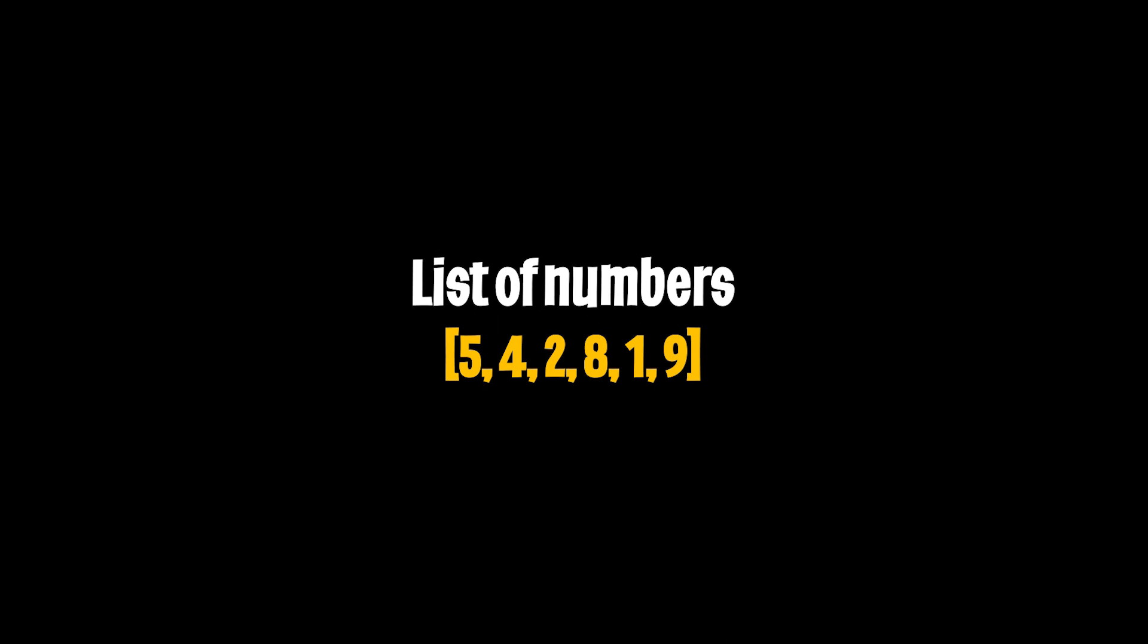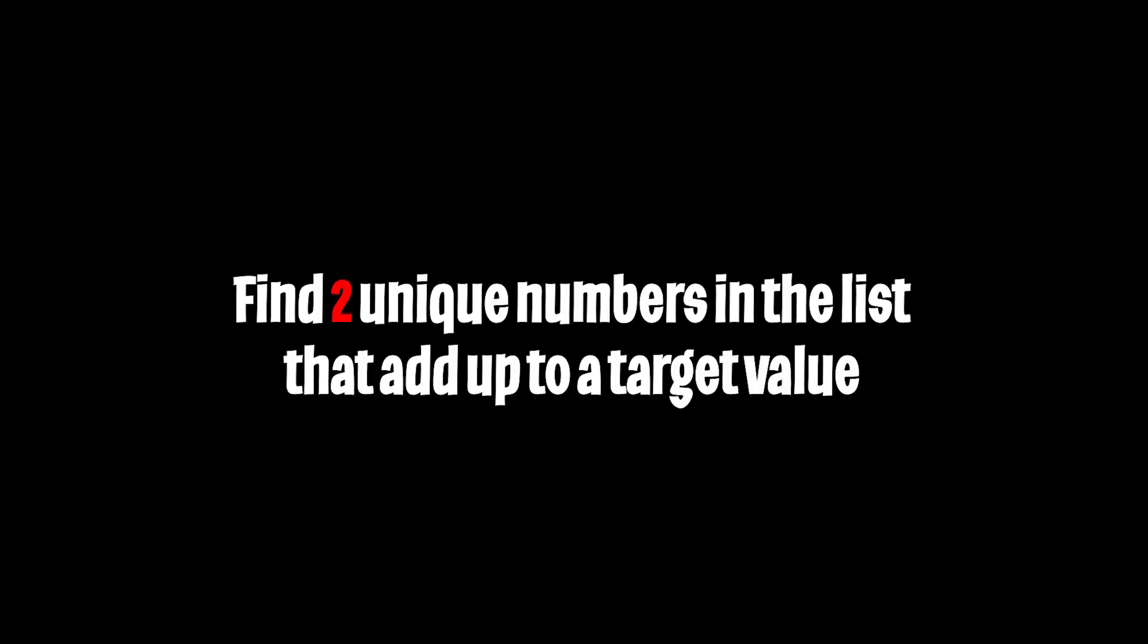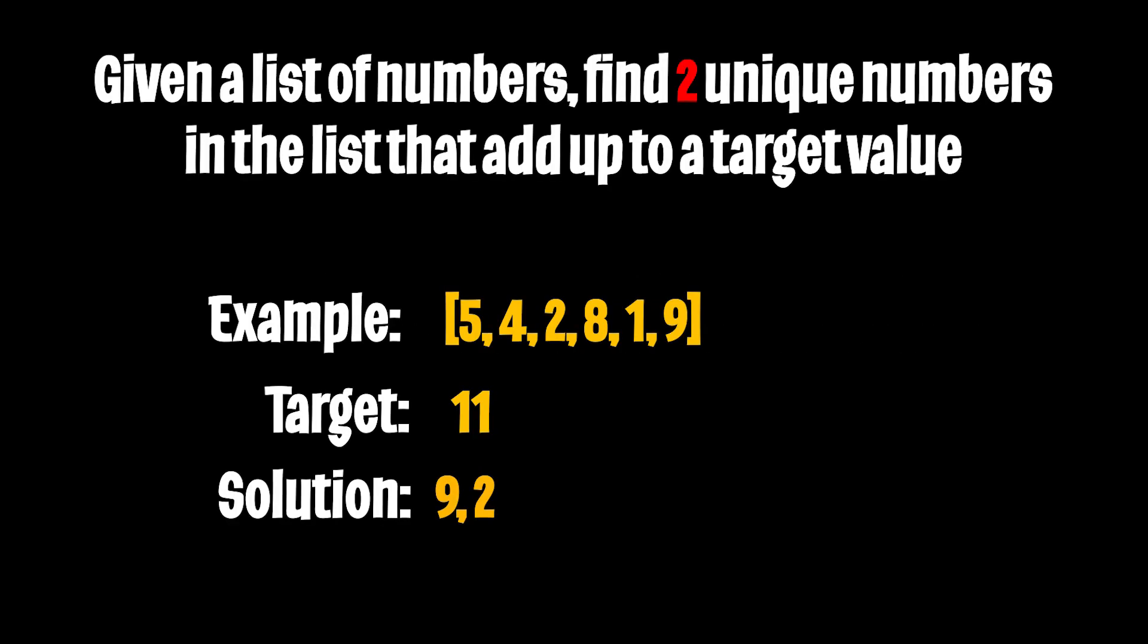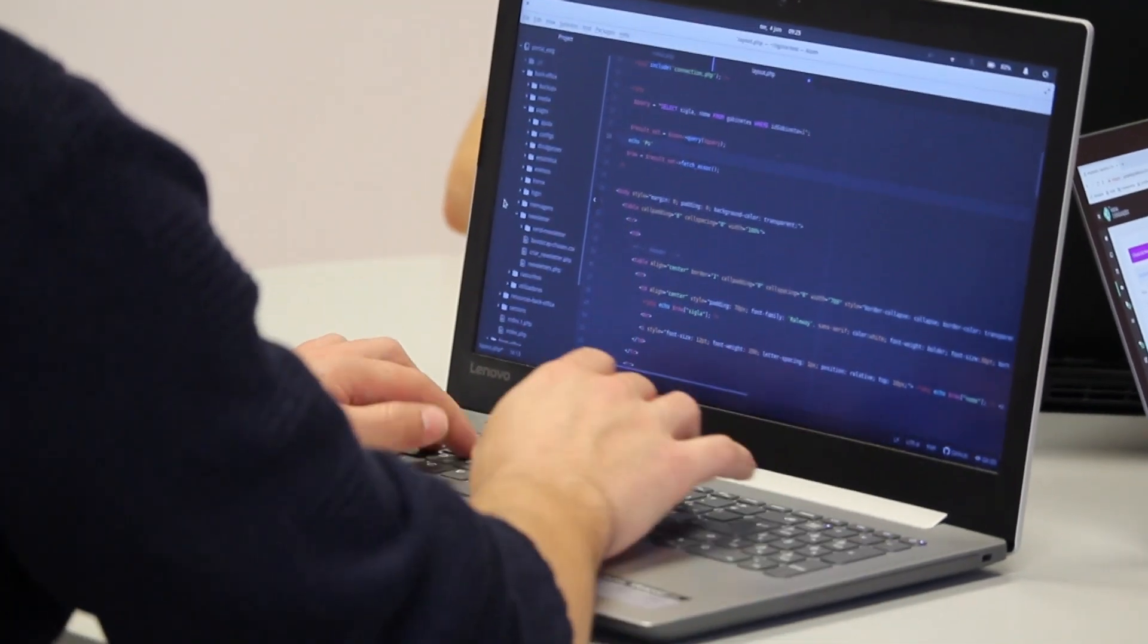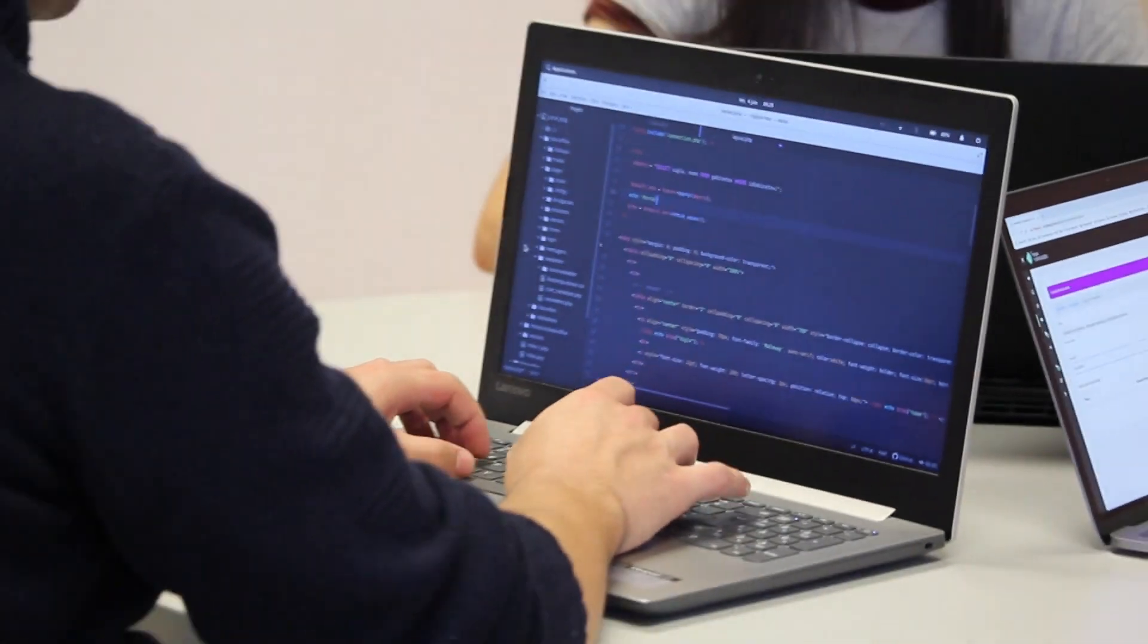If you're given a list of numbers like this and you were asked to find the two unique numbers that add up to a target value, how would you write code to solve this? Feel free to pause the video here and try to come up with your own solution. Cool, whether you came up with a solution or not, that's okay. Now let's do it together.